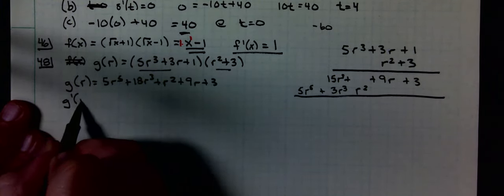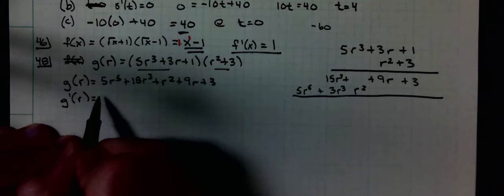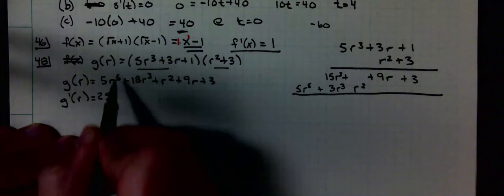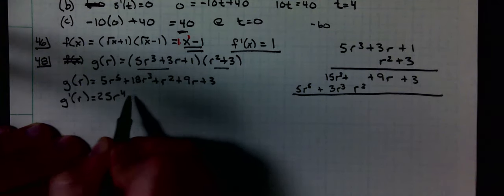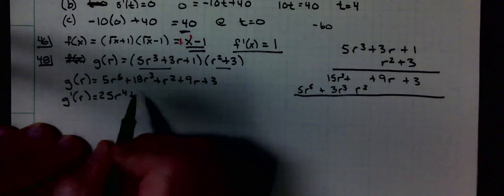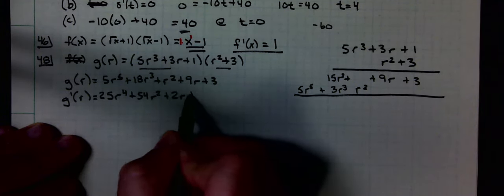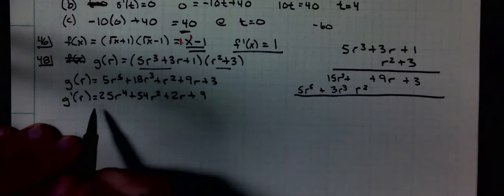The derivative is: multiply by the exponent I get 25r to the fourth. Subtract one from the exponent. Multiply by the exponent I get 54r squared plus 9, and the derivative of a constant is zero.